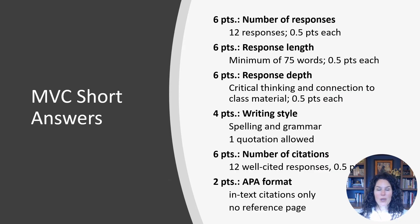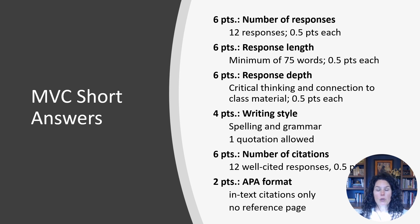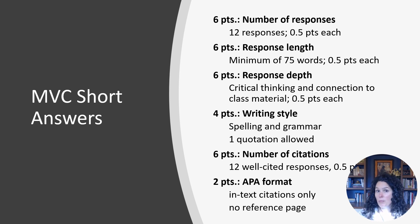Here's an overview of the rubric for the short answers. We give you a certain number of points just for completing the multiple choice answers in the simulation. For the short answers, there are 12 questions for the My Virtual Child simulation. We give you points just for having a response, then points for meeting our response length — we're looking for a minimum of 75 words, though many questions would be hard to answer in just that amount, so you'll often need more.